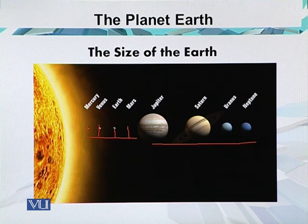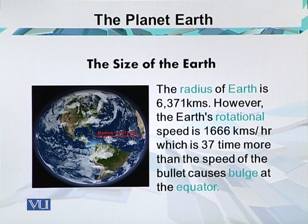The radius of the Earth is 6,371 kilometers. The Earth's rotational speed is 1,666 kilometers per hour, which is 37 times more than the speed of a bullet, causing a bulge at the equator. Earth is roughly spherical because of its fast spinning, so the bulge is very high at the equator which is on the outside.